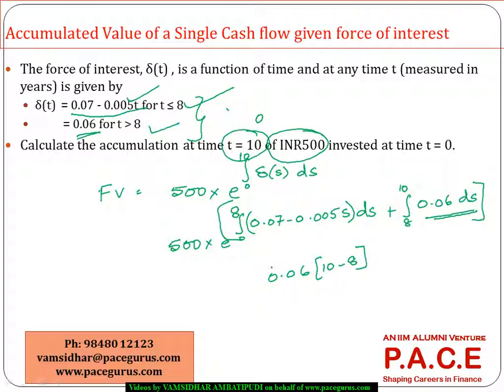10 minus 8. Whereas this part—so this entire thing is in the e to the power itself—0.07, the integral is 0.07S, which will be integrated between 8 and 0, minus 0.005 by 2 S squared, but S...